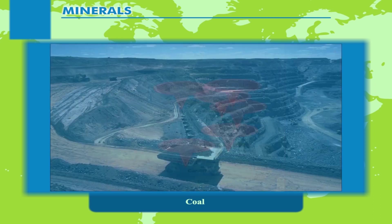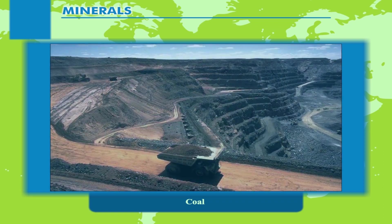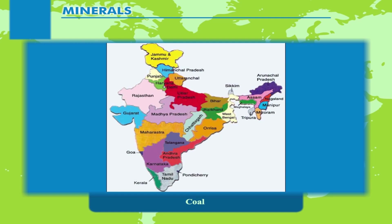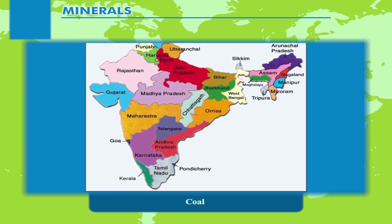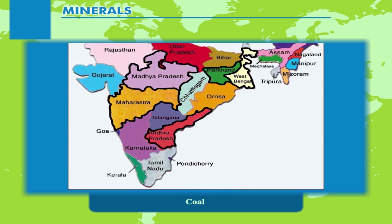Similarly, the Ruhr Basin and Rhine Basin of Germany produce good quality coal. India has mostly bituminous coal. The states of West Bengal, Jharkhand, Madhya Pradesh, Maharashtra, and Andhra Pradesh are the leading producers. Lignite is found mostly in Tamil Nadu.